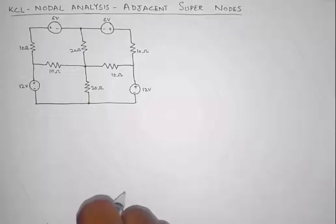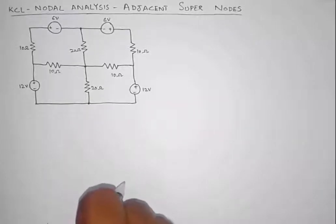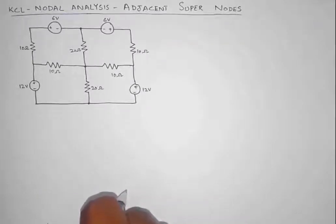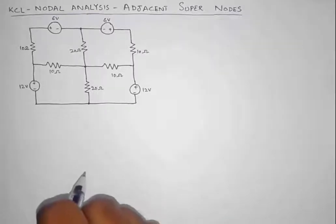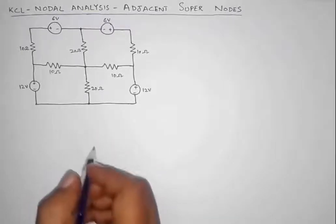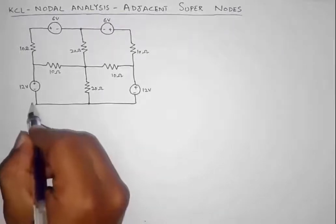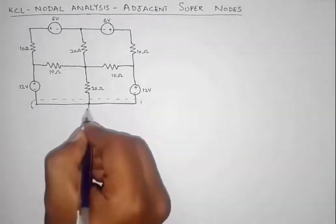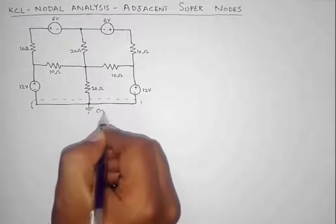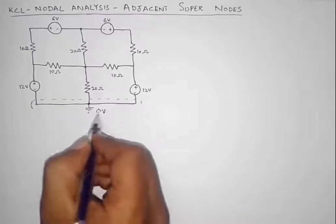Hi everyone, welcome back. Today we are going to solve a special case circuit. In this circuit we are going to solve multiple super nodes that are adjacent to each other. Let us begin our solution. As you can see in the circuit there are multiple sources, and we have to go ahead and select a reference node. I'm going to put this node down as the reference node.